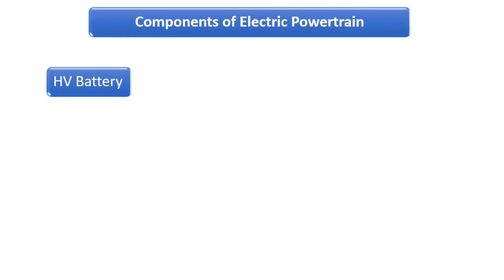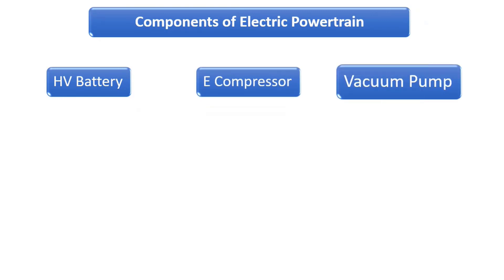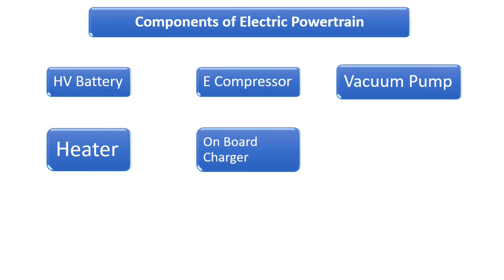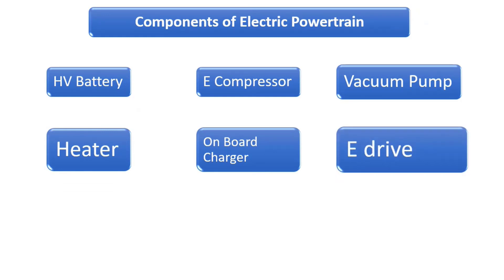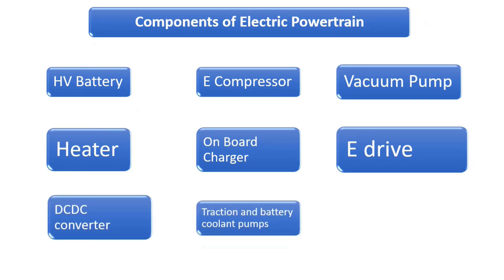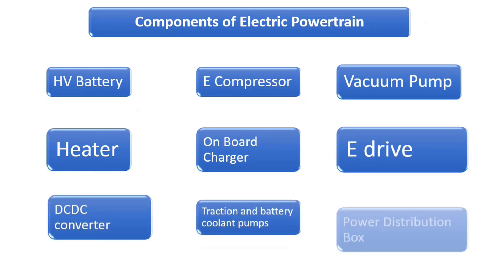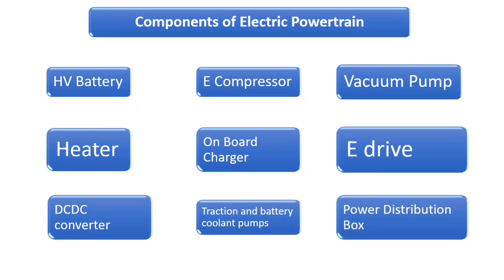The main component of the IC engine is replaced with the battery in an electric vehicle. The components of the electric powertrain include a high voltage battery, compressor, vacuum pump, heater, onboard charger, electric drive, DC-DC converter, traction and battery cooling pumps, and the power distribution box or power distribution unit.